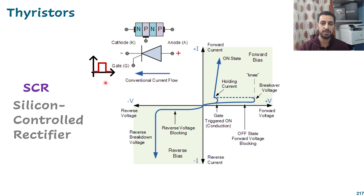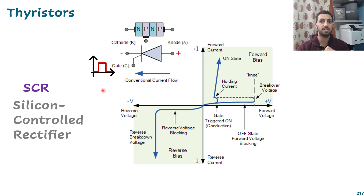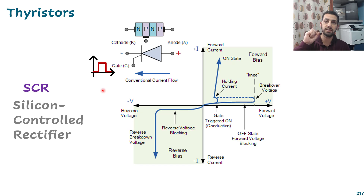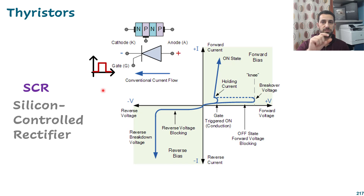The gate pulse doesn't need to be continuous - just a pulse is enough to turn on your thyristor. This is very important and different from transistors. For a transistor, you have to provide continuous current or continuous voltage across the gate or base. But for the thyristor, just a short pulse is enough to turn it on - and it stays on.